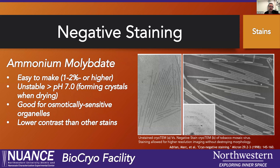I would recommend ammonium molybdate for lots of things — it's good to experiment with. You can see here, this was actually a cryo-TEM experiment. On the left in figure A you have regular cryo-TEM, and then they added ammonium molybdate, and you can see clearly this is a very negative stain appearance — the background is mostly stain. It's great for osmotically sensitive samples, but it can result in lower contrast. In this case it's much higher contrast, but it can be a little challenging to work with to get your data.